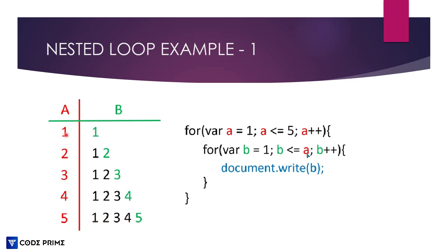There are five columns total. Variable 'a' is basically for the columns — one through five — and variable 'b' represents the last digit number. Variable 'a' is greater than or equal to 1 and less than or equal to 5, with a++ increment. Inside the nested loop, variable 'b' starts at 1.